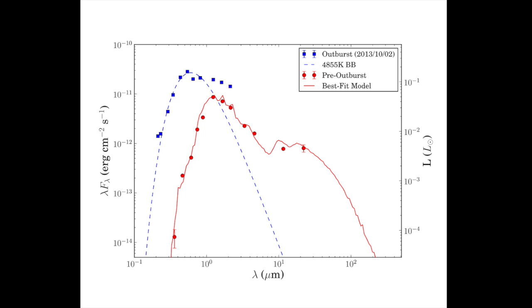The outburst data, shown as blue points in the figure, are well fit by a 4855 Kelvin black body curve, shown as a blue dashed line. The near IR data are not as well fit by this curve, which implies that there is also likely increased emission from the star's circumstellar disk, but we do not have the mid-IR data needed to fit a disk model. Integrating over this black body curve gives a lower limit to the luminosity in outburst of 0.2 solar masses.